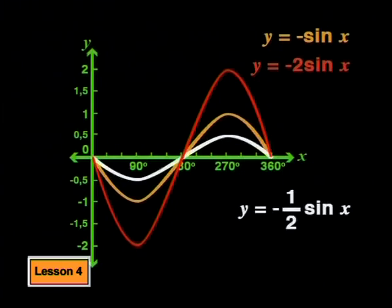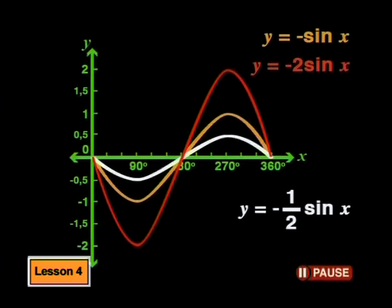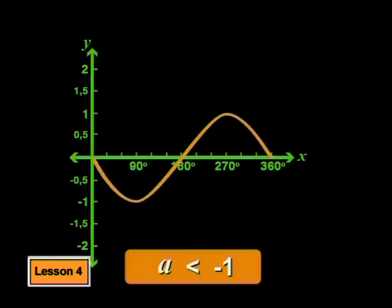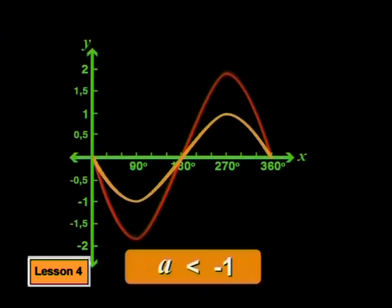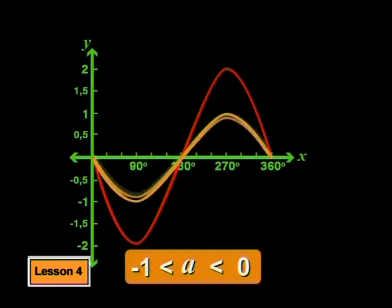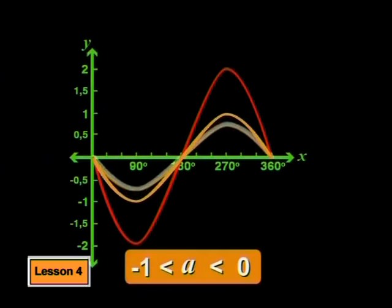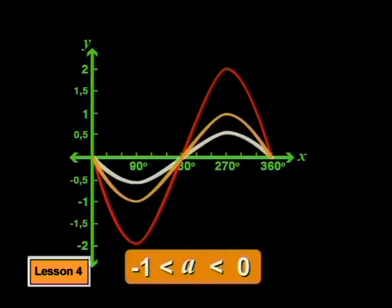We have used two negative values of a: negative 2 and negative one half. Can you use what we found to make a conjecture about the effect of a on the sine and cosine graphs when a is negative? We can say that for a less than negative 1, the graph is stretched vertically by a factor of a. For a between 0 and negative 1, the graph is pulled towards the x-axis by a factor of a.